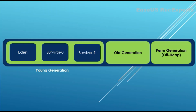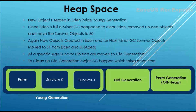The young generation itself is further divided into three components: Eden space, Survivor space 0, and Survivor space 1. Any new object created in Java will be allocated memory inside Eden space, and it will keep on adding all the newly created objects to Eden space.